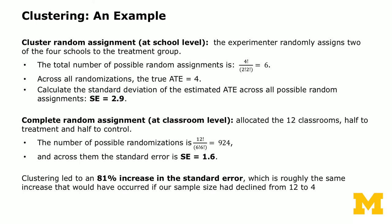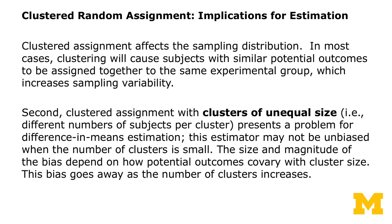That's the tradeoff: for political feasibility, you randomize at the school level, and the resulting standard error is much larger. When you have clustered random assignment, this affects the sampling distribution, and if clusters are of unequal size, it presents a problem for difference-in-means estimation. This problem diminishes as the number of clusters increases.